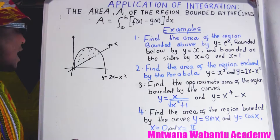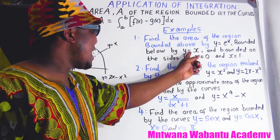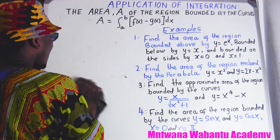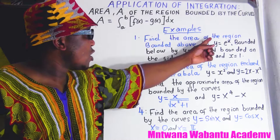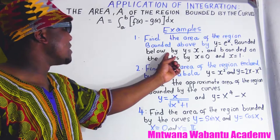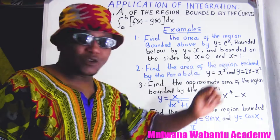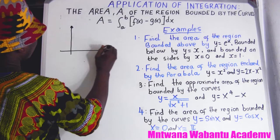There are different types of regions. For the first question it involves an exponential and a straight line. Let's see how we can find the area enclosed between curves using integration. The first question says: find the area of the region bounded above by y equals eˣ and below by y equals x, from x equals zero to x equals one.